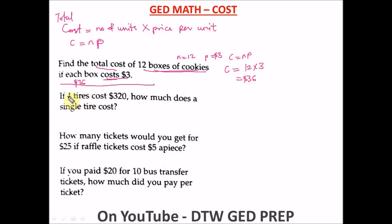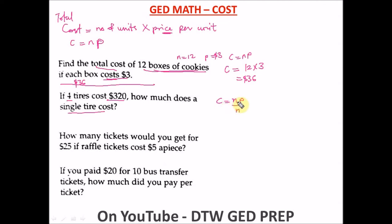The next question: if four tires cost 320 dollars, how much does a single tire cost? Here we are looking for the price per unit P. From our formula C equals N times P, we need to make P the subject. We divide both sides by N to cancel it out, giving us P equals C over N.